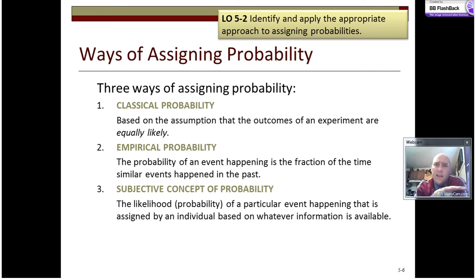A subjective concept of probability is the likelihood of a particular event happening that is assigned by an individual, by the subject, based on whatever information is available. So if I want to try to predict the Super Bowl winner, I might say, well that team has the best offense, and that team has the best defense, and there might be bad weather, but it might be good weather, and that guy's playing hurt. Whatever information I come up with, I'm going to decide that one team has a higher probability of winning than the other. That's my subjective probability. It will vary from person to person, because it's subjective.